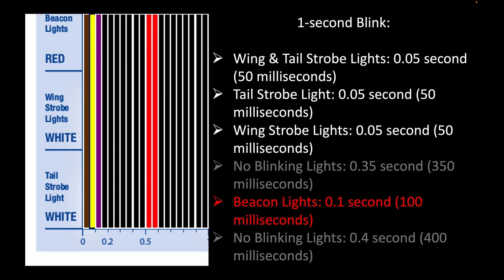After 50 milliseconds, the wing lights are turned off momentarily, leaving the tail strobe light only turned on. In the next 50 milliseconds, the tail strobe light turns off and then the wing strobe lights turn on again.